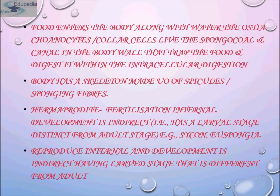Some species also form internal buds called gemmules, which can survive extremely unfavorable conditions that cause the rest of the sponge to die. In sexual reproduction, male gametes are released into the water and taken up into the pore system of neighbors. Spermatozoa are captured by collar cells, which then lose their collars and transform into specialized amoeba-like cells that carry the spermatozoa to the eggs. Some sponges are monoecious; others are dioecious.